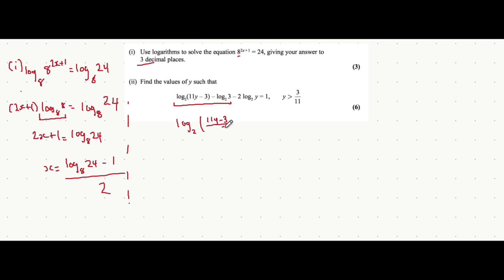11y minus 3, all divided by 3. Take away 2 log base 2y equals 1. So we're almost at a point where we can combine these two logarithms as well, but there's a 2 in front of the log which keeps us from using that division rule. So what we do here is the opposite of what we did before. Before we took the power down as a coefficient. Here we can take the coefficient forward as a power. So we can write this out as log base 2 of y squared.